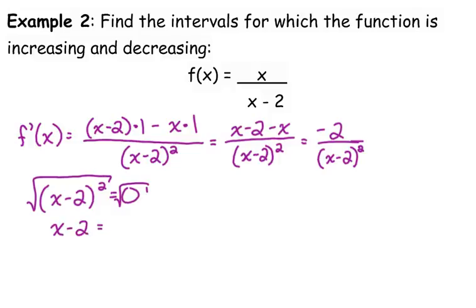So we take the square root of both sides. The square root of 0 is just 0, and then we add 2. So our critical point is x equals 2.